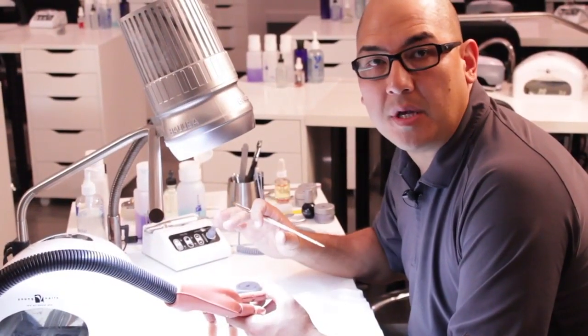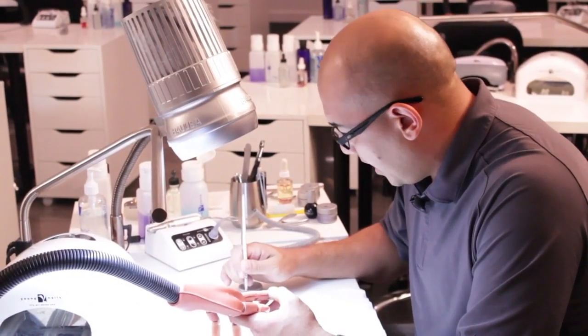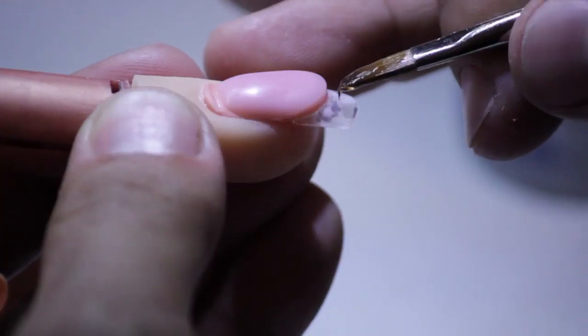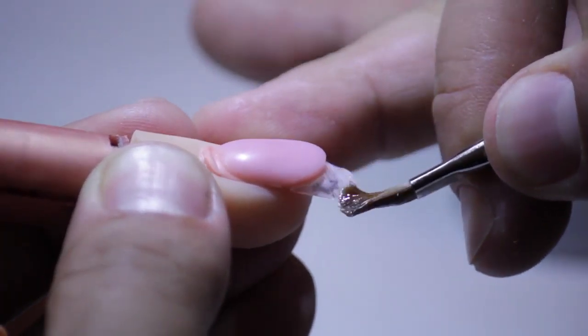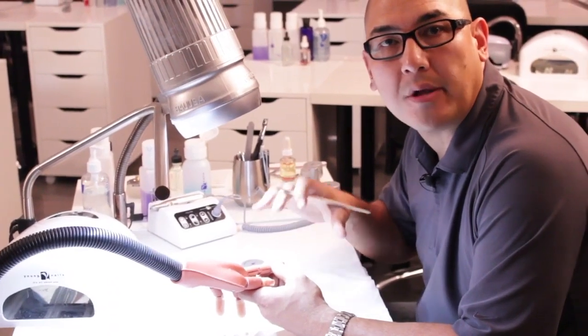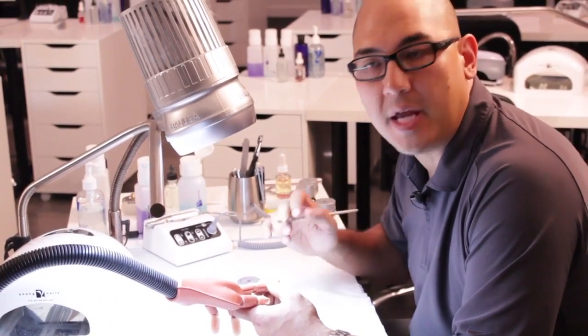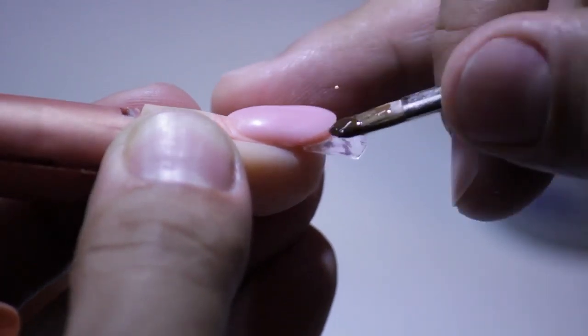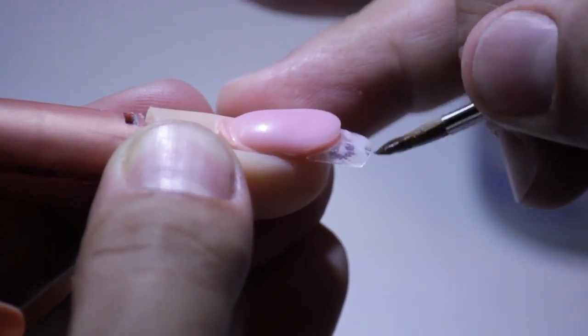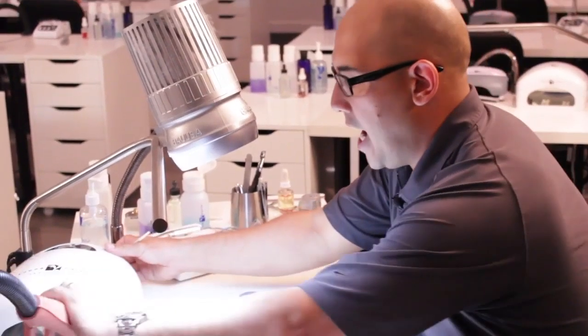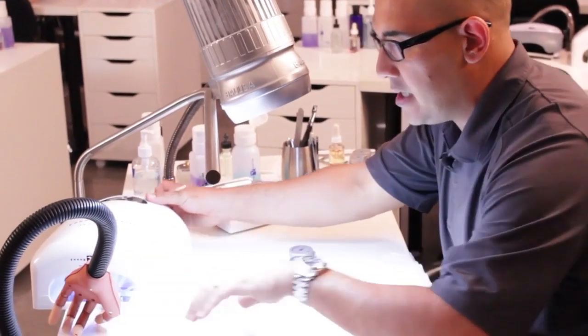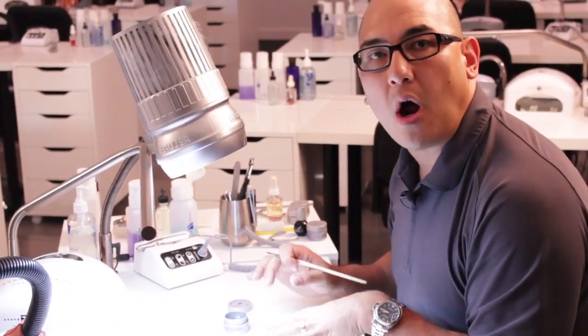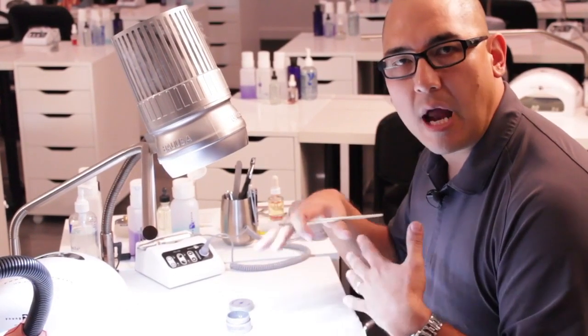After we have applied protein bond to the free edge, we're going to take a little bit of base, just enough to add a sticky layer so that the white sculpture bonds really well to the free edge. Once you get it on, it's going to go inside the light and you're going to work on the other hand. Once you're done applying it to the other hand, you're ready for the white sculpture application.